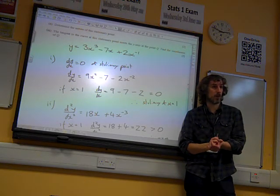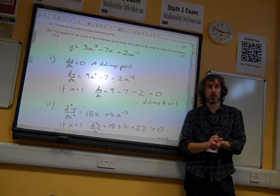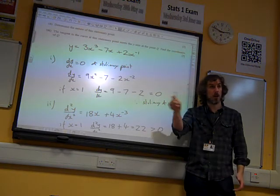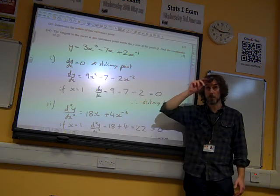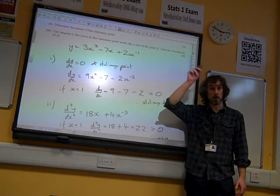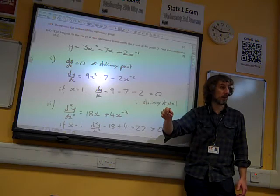Now, what does a stationary point, what's the tangent to a stationary point look like? It's a horizontal line, isn't it? Because it's a stationary point. So whether it's a minimum or a maximum, the tangent is a horizontal line.